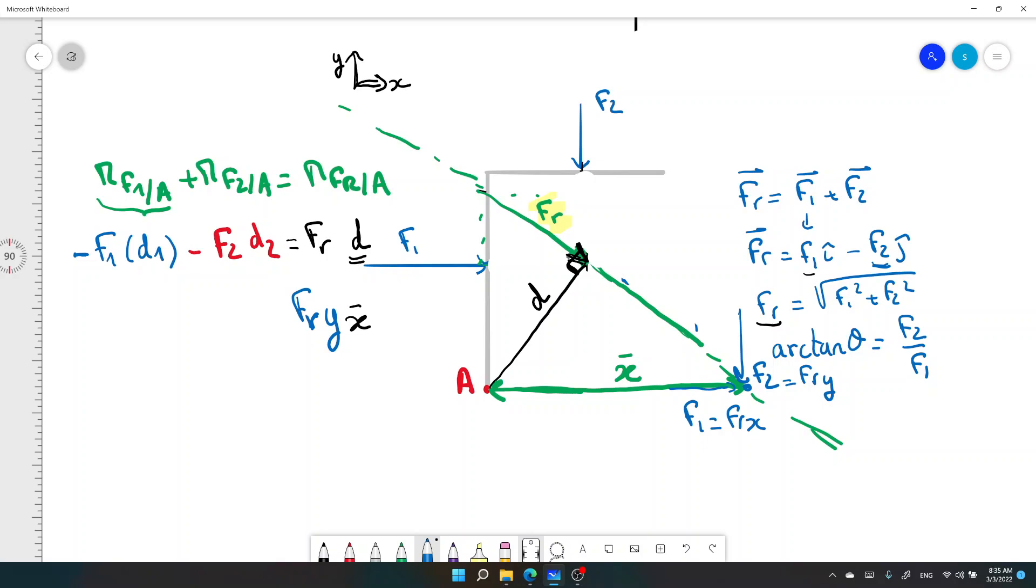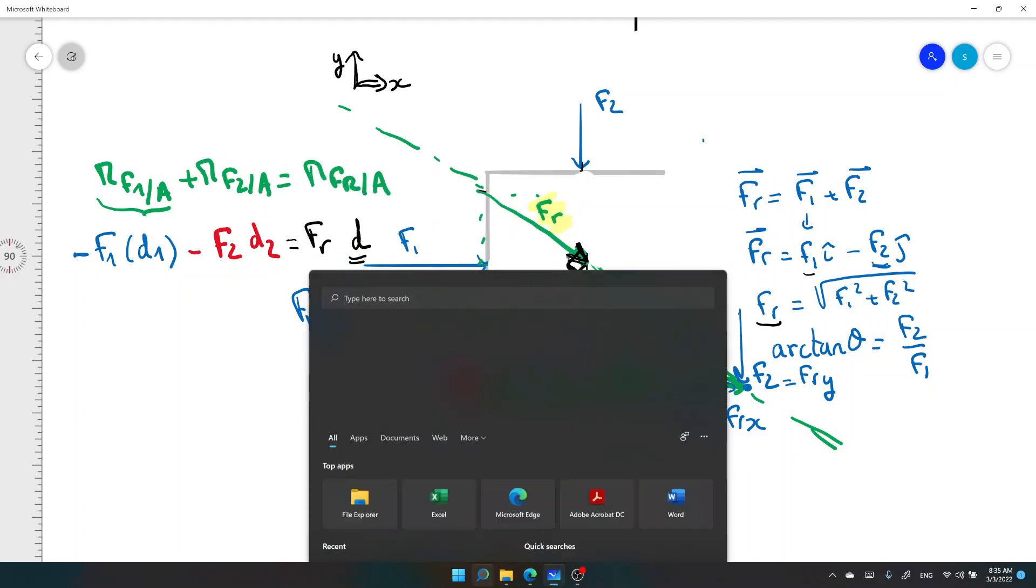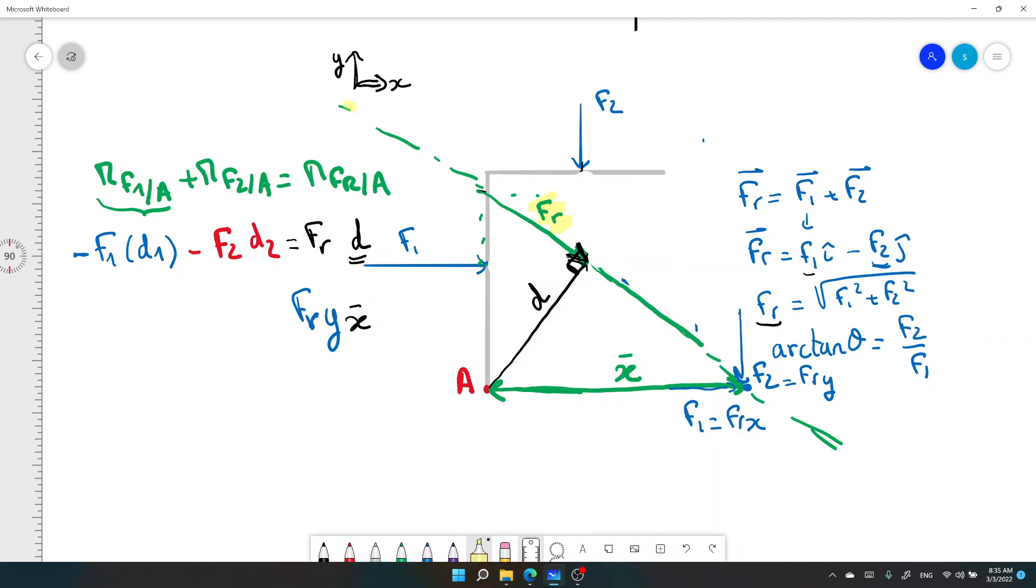So what you need to use there, that's the component F2. Or generally, the component F,R,Y. Because when we move this Fr up to this point, F2 equals F,R,Y for us, and F1 equals F,R,x. Because we just have a force on x and a force on y. So when we slide the force along its line of action, we have F2 vertical and F1 horizontal, and F1 is going through the point A, so it doesn't create any rotation. So minus F1, d1, minus F2, d2, equals Fr,Y, the component on y, times x bar.